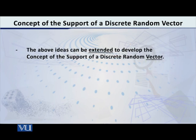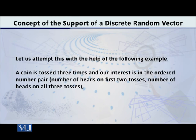Now, when all these things are clear, we can extend this idea to the case of a discrete random vector. Let me do it with the help of a simple but interesting example — the case when we have two variables, x1 and x2.